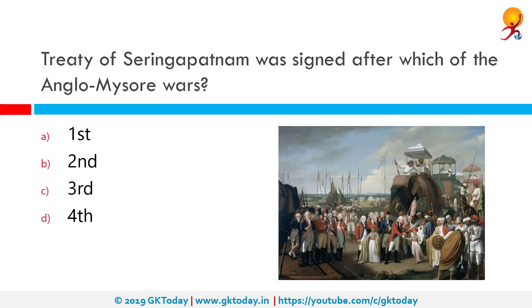The treaty of Seringapatnam was signed after which of the following Anglo-Mysore wars? The correct answer is the third war. The treaty of Seringapatnam, signed 18th March 1792, ended the third Anglo-Mysore war. Its signatories included Lord Cornwallis on behalf of the British East India Company, representatives of the Nizam of Hyderabad and the Maratha Empire, and Tipu Sultan, the ruler of Mysore.